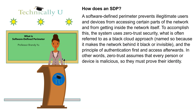How does a software-defined perimeter work? A software-defined perimeter prevents illegitimate users and devices from accessing certain parts of the network and from getting inside the network itself. To accomplish this, the system uses zero trust security, what is often referred to as a black cloud approach, named so because it makes the network behind it black or invisible, and the principle of authentication first and access afterwards. In other words, zero trust assumes that every person or device is malicious, so they must prove their identity.